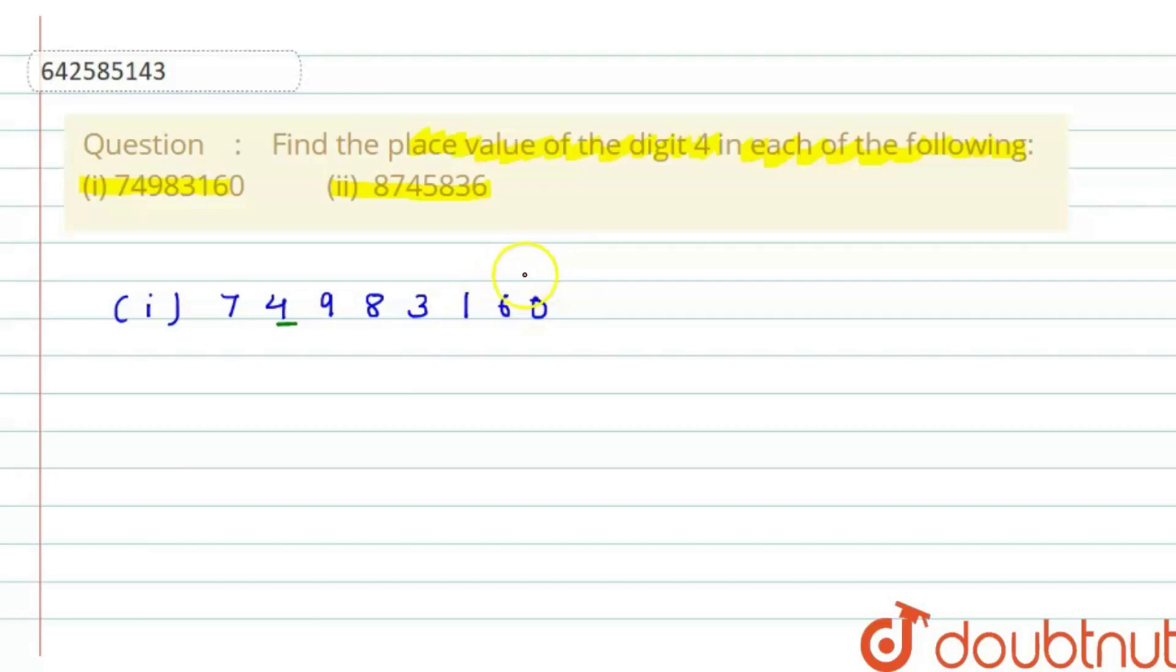That is ones, tens, hundreds, thousands, ten thousands, lakh, ten lakh and crore. Now what we have to do is that in order to find the place value.